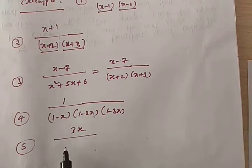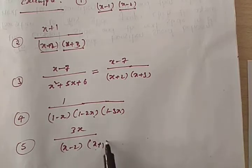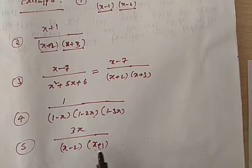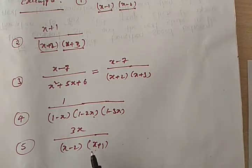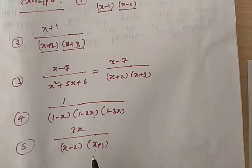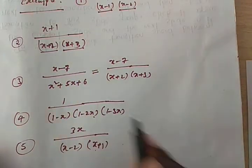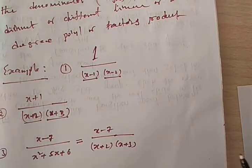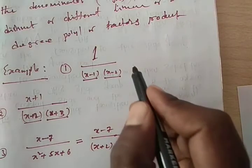Another example: 3x / [(x−2)(x+1)]. This is also a Type 1 problem because the denominator is a product of distinct linear factors. Keep in mind: the denominator should be a product of distinct linear polynomials for that fraction to belong to Type 1.